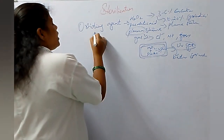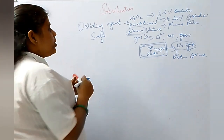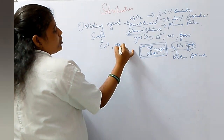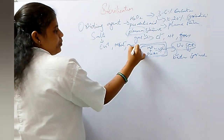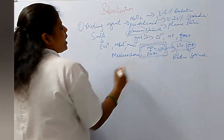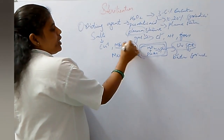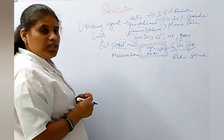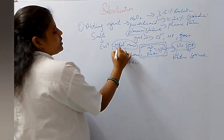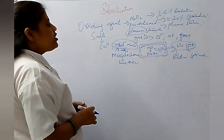Next we have salts. In salts we have heavy metals like copper, mercury chloride, and mercurochrome. Salts have disinfectant and bactericidal activity. Mercury chloride is highly toxic, whereas mercurochrome is less toxic.